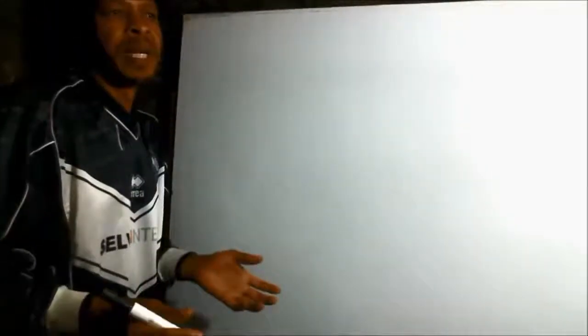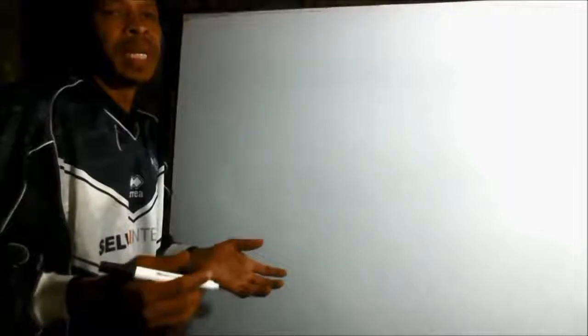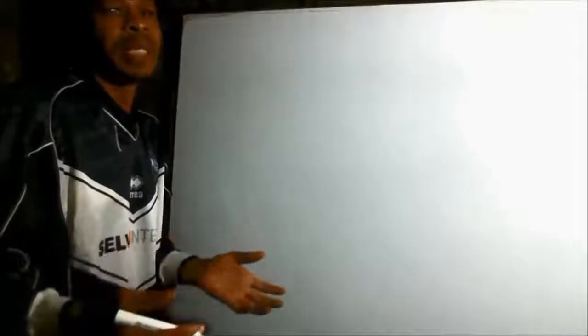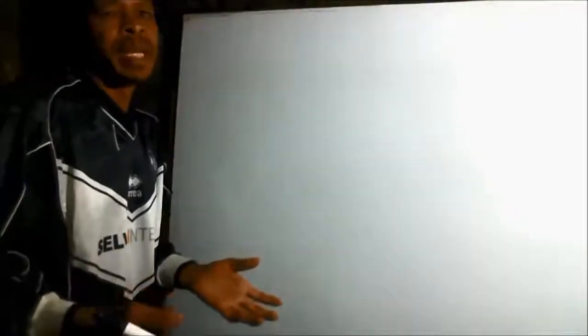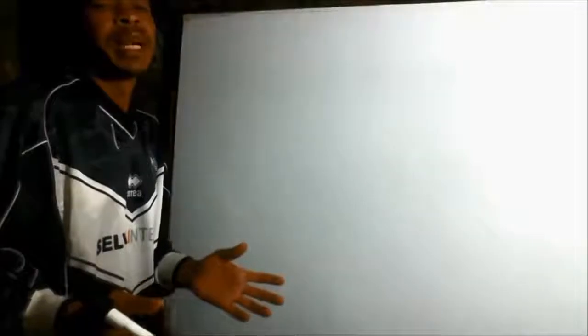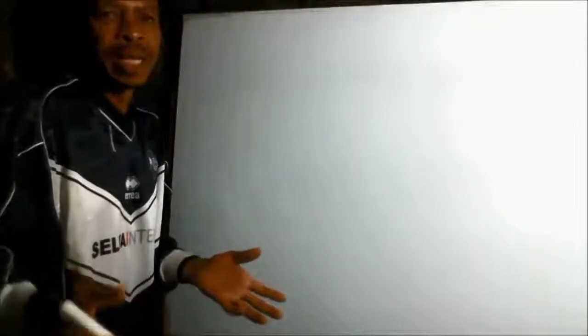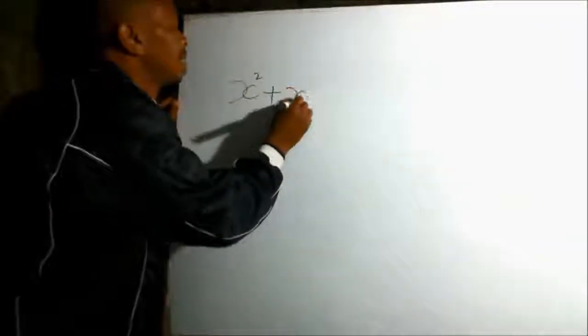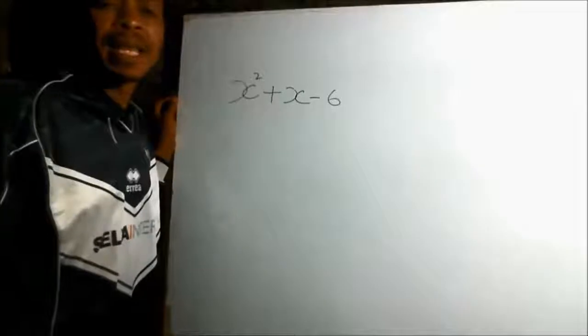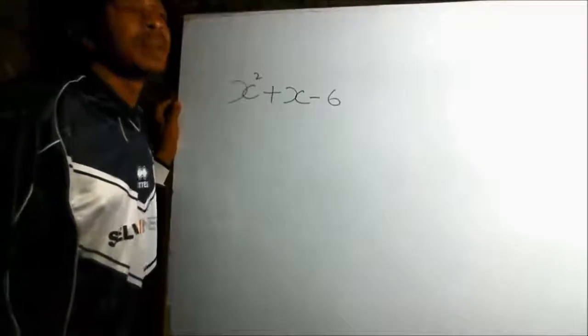In our previous example, we noted what a perfect square is. In this next example, let us see what we get after we factorize. We are going to take the quadratic expression x squared plus x minus 6.